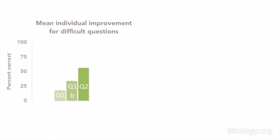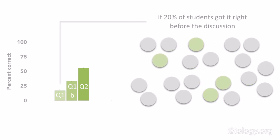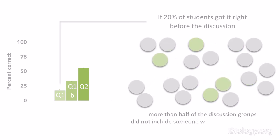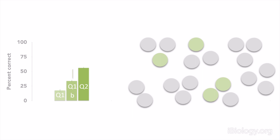The other interesting thing that we learned from this exercise is that if you look at the difficult questions where only about 20% of the students got it right the first time, then statistically it was clear that more than half of the discussion groups did not contain anybody in them who knew the correct answer. And yet, on the iteration after discussion and then on the subsequent follow-up question, many of these groups arrived at the right answer.